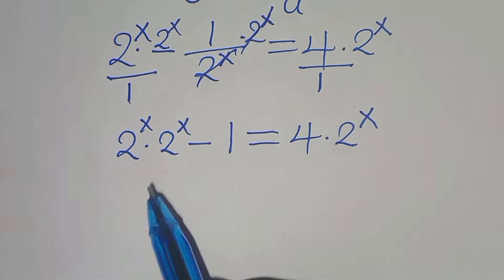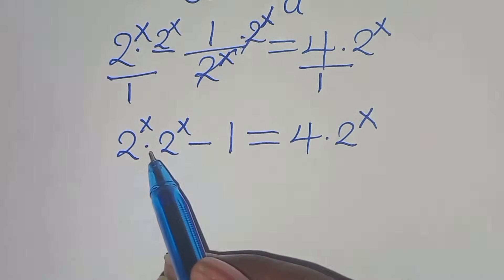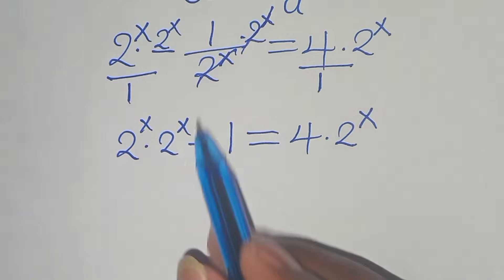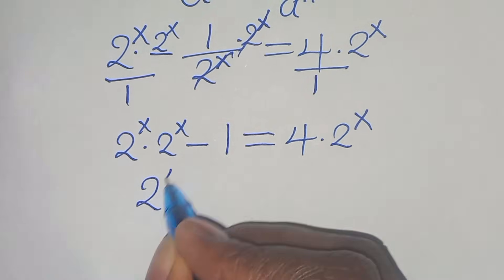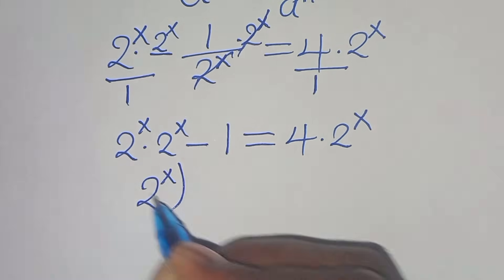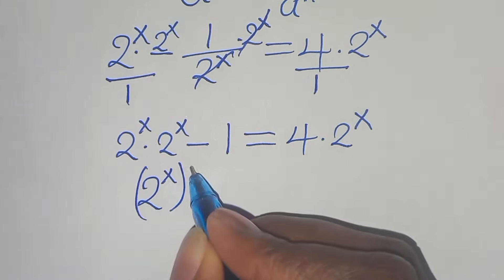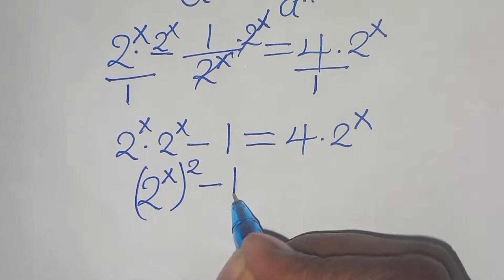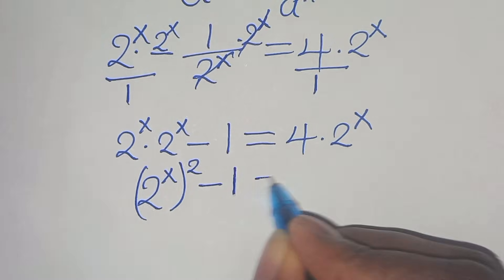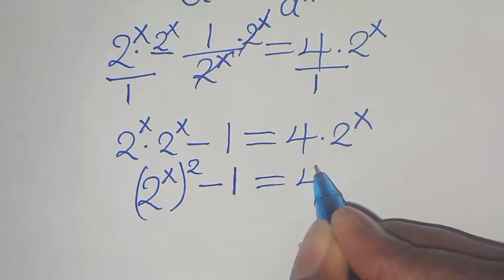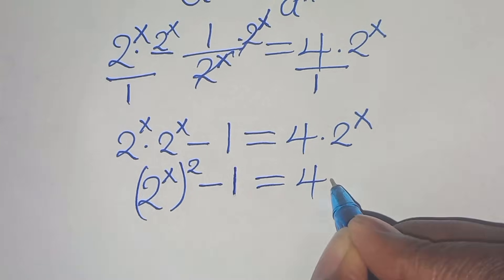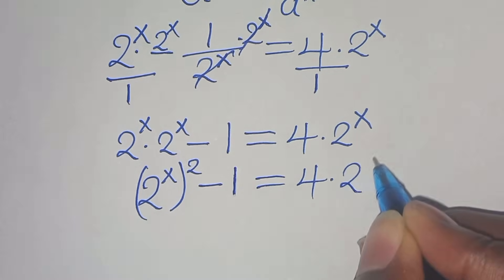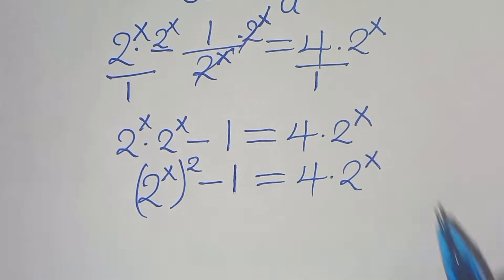Now 2 to the power of x times 2 to the power of x simplifies to 2 to the power of 2x. So we have 2 to the power of 2x minus 1, and this is equal to 4 times 2 to the power of x.